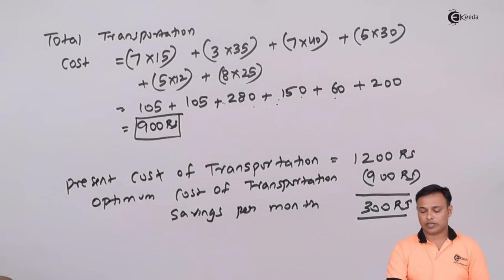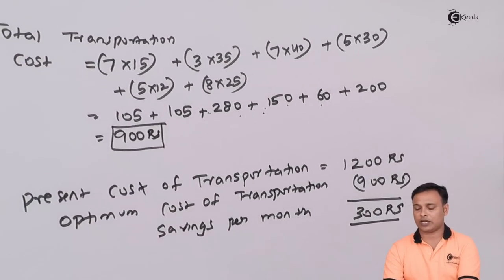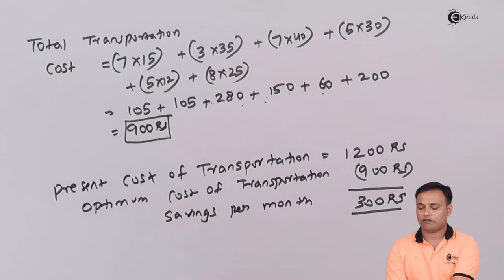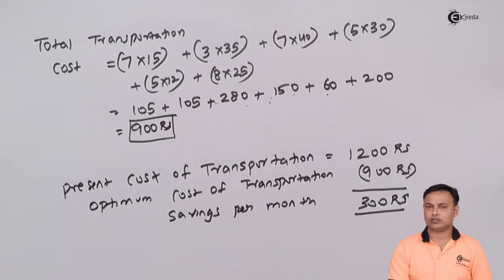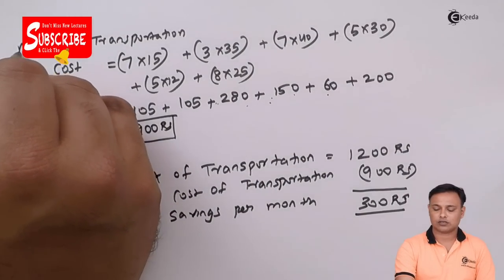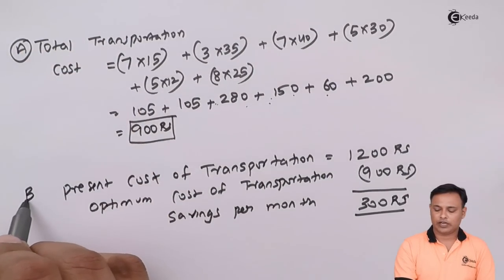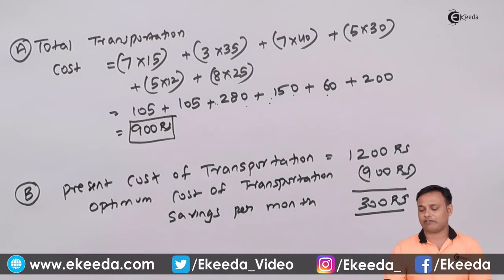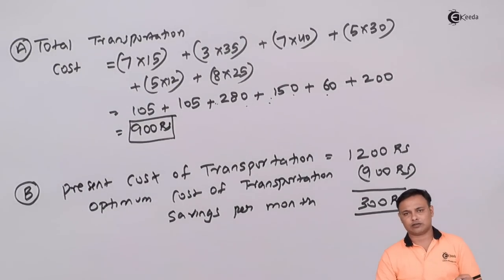So this was the solution. There were two parts: first, calculate the optimal transportation cost — which is rupees 900. Second, indicate how much savings — the savings will be rupees 300 per month. Thanks for watching this video. Do subscribe to our channel Ikeda.